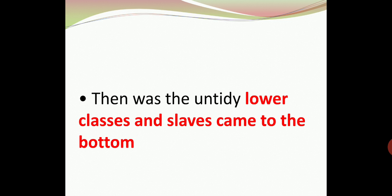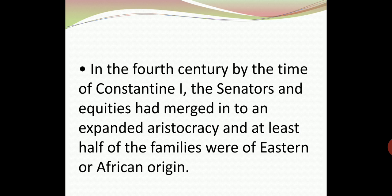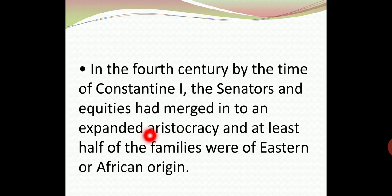In the early third century, when the senate numbered roughly 1000 members, approximately half of all senators still came from Italian families. By the late empire, which started with the reign of Constantine in the early part of the 4th century, the first two groups mentioned by Tacitus — senators and equites — had merged into a unified and expanded aristocracy.